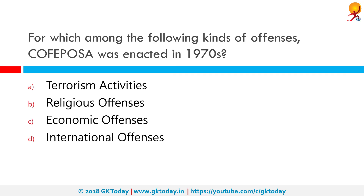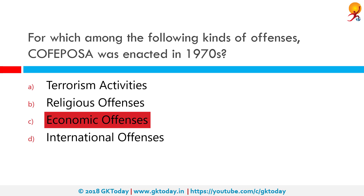For which among the following kinds of offenses was COFEPOSA enacted? COFEPOSA, enacted in the 1970s, stands for Conservation of Foreign Exchange and Prevention of Smuggling Activities Act. It is an act passed by Parliament in 1974 during the administration of Indira Gandhi, aimed at retaining foreign currency and preventing smuggling. All of these are economic issues, hence this act is for option C: economic offenses.